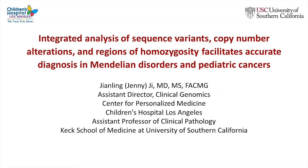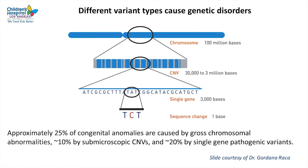Thank you for the introduction. Today I'm going to talk about our experiences of integrated analysis of sequence variants, copy number alterations, and regions of homozygosity in Mendelian disorders and pediatric cancers. As we all know, there is a broad spectrum of variation in our genome and our genetic disorders can be caused by different variant types — chromosomal abnormalities, copy number variants, single gene level abnormalities, as well as sequence variants.